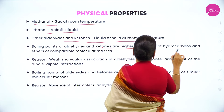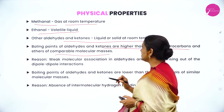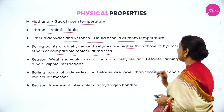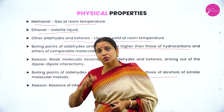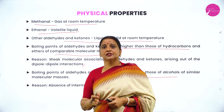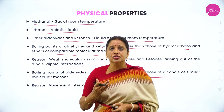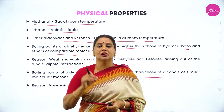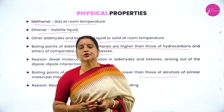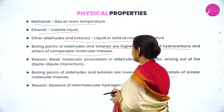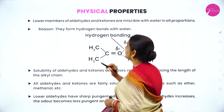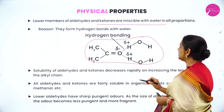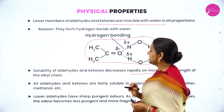Boiling points of aldehydes and ketones are higher than those of hydrocarbons and ethers of comparable masses, because of weak molecular association arising from dipole-dipole interactions. However, boiling points of aldehydes and ketones are lower than those of alcohols, because alcohols have higher boiling points due to intermolecular hydrogen bonding. Aldehydes and ketones lack hydrogen bonding, so their boiling points are lower than corresponding alcohols. Lower members of aldehydes and ketones are completely soluble in water because they form hydrogen bonds.